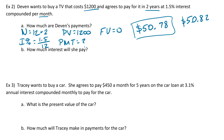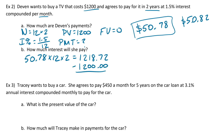How much interest will she pay? Let's figure out how much she actually paid in total. It's $50.78 per month, so we multiply by 12 to get how much she pays per year, and then multiply by 2 since it's over two years. That gives us $1,218.72 — that's how much she actually paid for the TV. Since $1,200 went toward paying for the TV itself, we subtract that out and get $18.72, which is how much interest she paid.